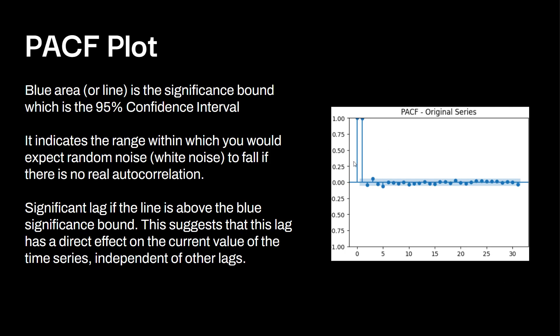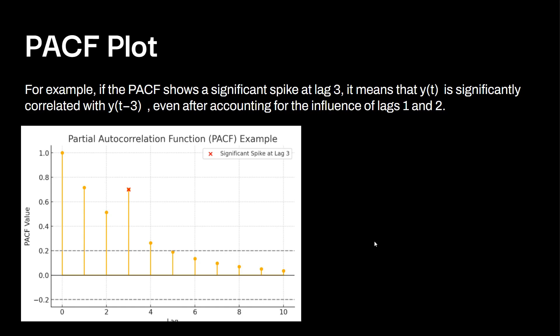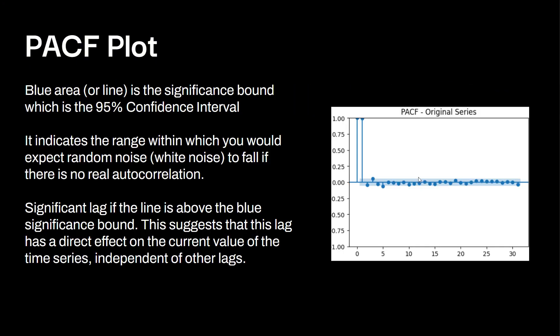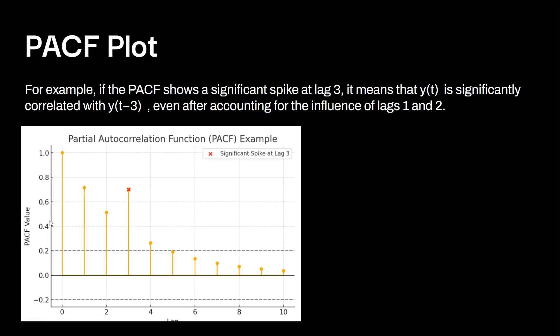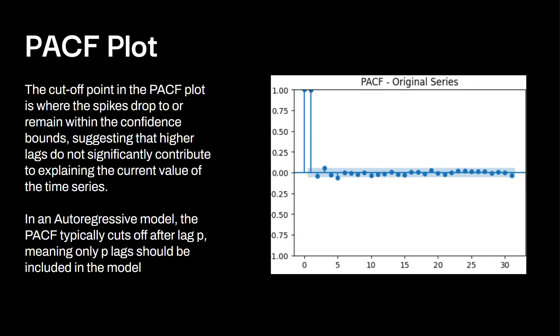As I mentioned in the ACF video, we're going to start at zero, it's going to be one. And then you can see this one has a direct impact. For example, if the PACF plot shows a significant spike at lag three, it means that Y at T is significantly correlated with Y at T minus three, even after accounting for the influence of lags one and two. You can see this right over here, this is significance. And this is an example also of the dashed lines versus blue section. These are two different versions you'll see. You'll either see a blue section like this, or you'll see dashed lines. Both just two different ways to represent the data. The cutoff point in the PACF plot is where the spikes drop or remain within the confidence bounds, suggesting that the higher lags do not significantly contribute to explaining the current values of the time series.